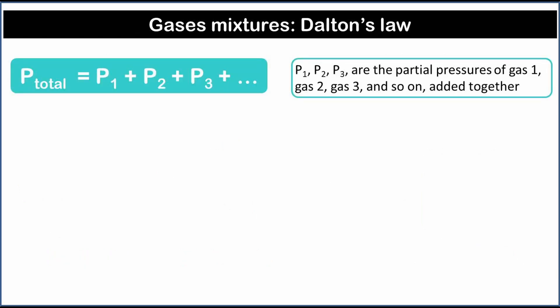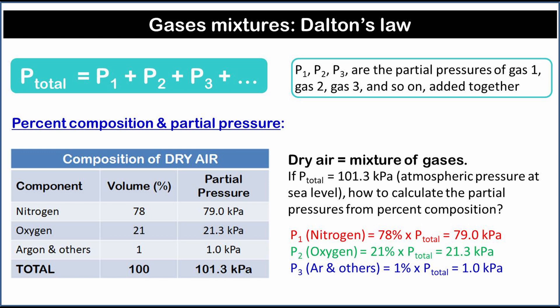Dalton's law states that the total pressure of a mixture of gases equals the sum of the partial pressures of the gases in the mixture. The partial pressure is the contribution each gas in a mixture of gases makes to the total pressure. In a gas mixture, the percent composition of a component, expressed in volume percent, is related to the partial pressure of the component. In this table, the volume percent of the different components in dry air are given. Dry air is air that does not contain water vapor. If the total pressure is known, the partial pressure of each component can be calculated.